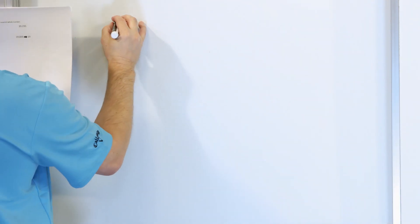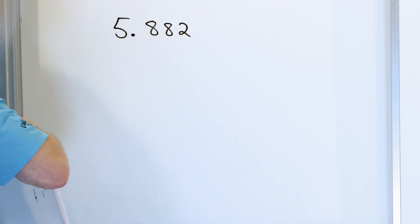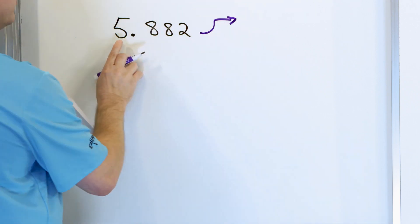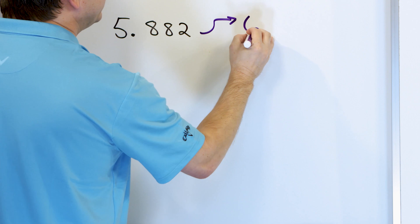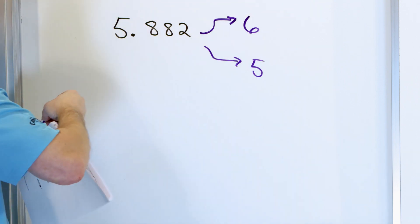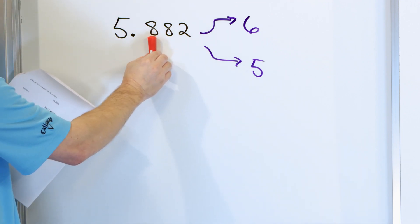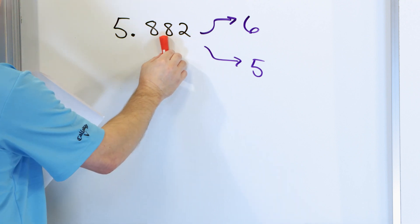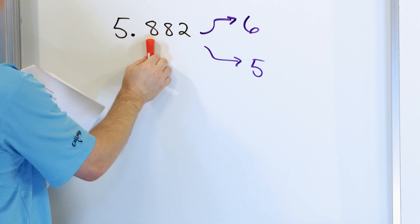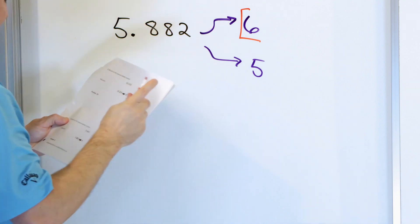Let's take a look at the next problem: 5.882. We're rounding to the nearest whole number, so we can either round up to 6 or round down and stay at 5. To determine what to do, look next door — we have an 8 in the tenths place. We only look at that next-door digit; we don't care about the others. Since 8 is 5 or bigger, we round up. The answer is 6.